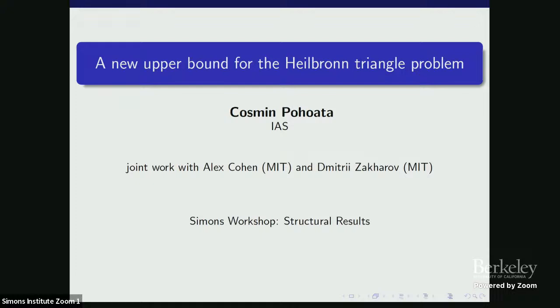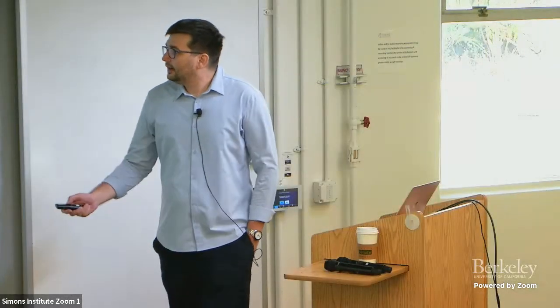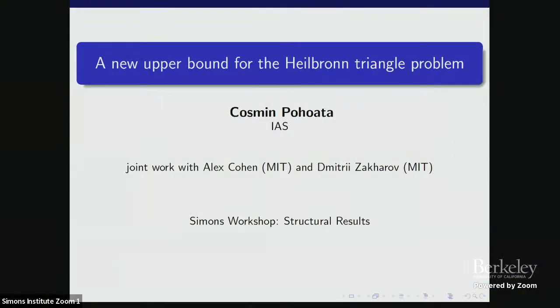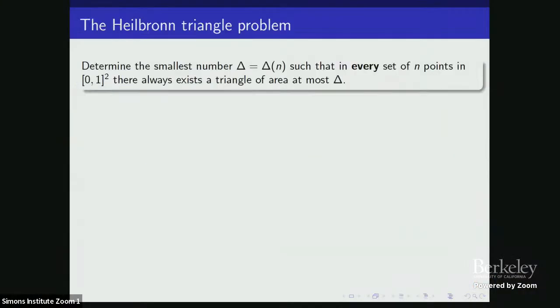Alex Cohen and Dimitri Zakharov, two fantastic PhD students from MIT. Dima, you probably met already. Alex, unfortunately, didn't make it here. So the topic is the Heilbronn Triangle problem, some recent developments. I'll start gently by introducing the problem, say some things about the history and some of the ideas that motivated the new result.